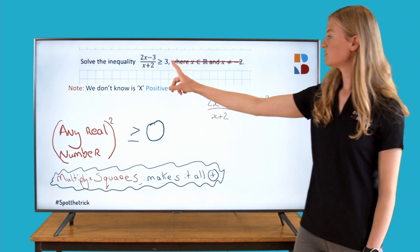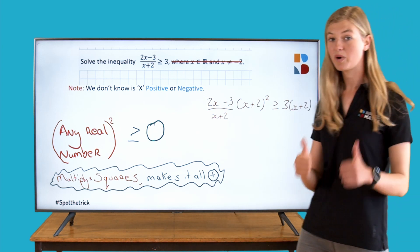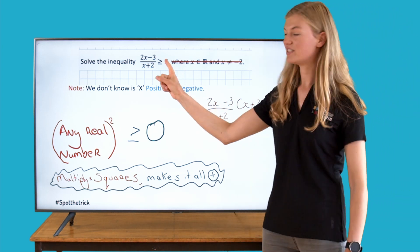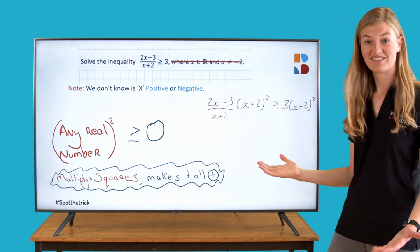Then we're going to multiply 3 multiplied by our x plus 2 squared again, because remember we want this inequality sign to stay happy. And that's it, that's the trick.